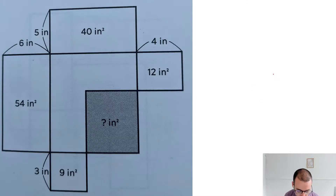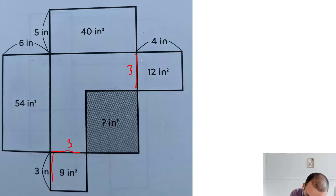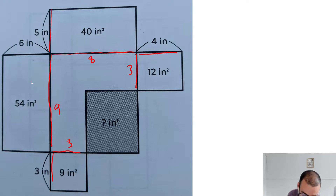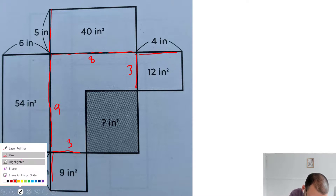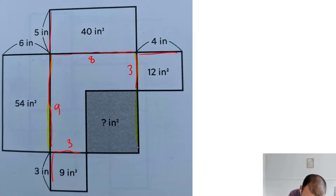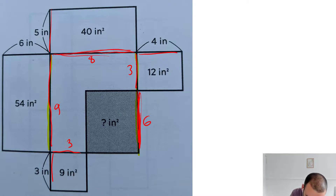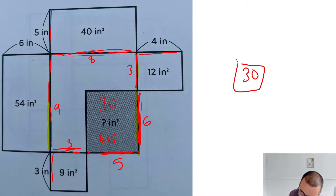So what can we work out here? Loads. This length is three — three times three is nine. This length is also three because three times four is 12. If that length is five, this length has to be eight. If that length is six, this length has to be nine because nine times six is 54. Now if this whole bit is nine, that means this bit has to add to nine, which means this guy is six because three plus six is nine. Similarly, up here we have an eight and down here a three, so this bit has to be five because five plus three is eight. So this is six times five, which is 30.